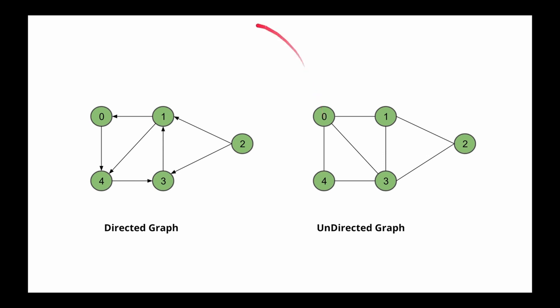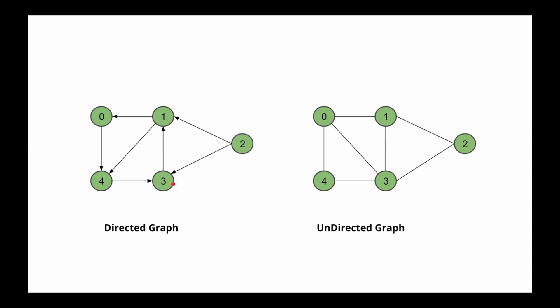Now let's talk about directed graphs. In a directed graph, node 0 specifically points to node 4, node 4 specifically points to node 3, node 3 specifically points to node 1, node 1 specifically points back to node 4, and node 2 specifically points to node 1 and to node 3.